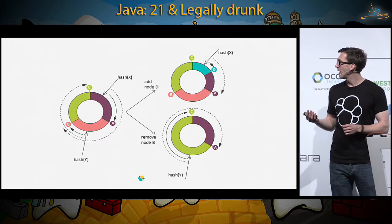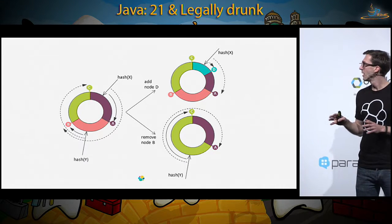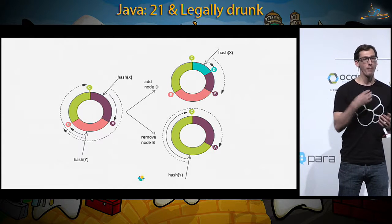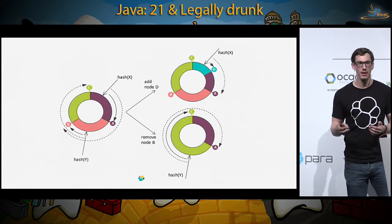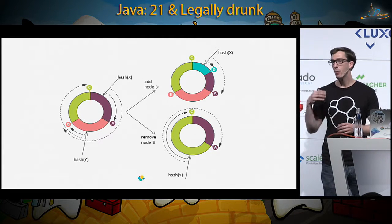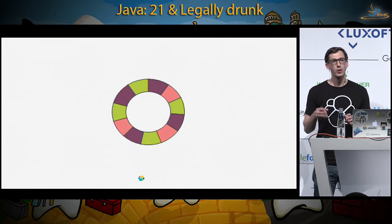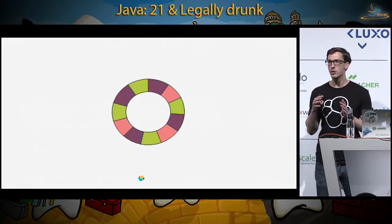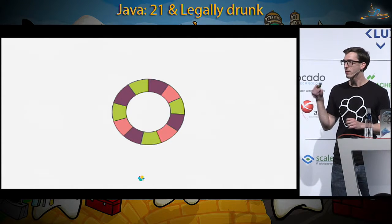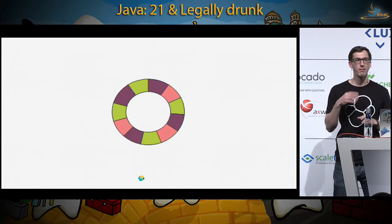If a node fails — say node B — node C, which already has B's replicated data, takes over serving that data primarily, and also replicates it to node A to maintain two copies. This is why your data is safe with Cassandra. To make scaling easier, you use virtual nodes (vnodes): instead of splitting the key space into a few large chunks, you use multiple smaller ones distributed evenly across servers. If one server fails, you don't have one huge chunk to migrate but multiple smaller ones already distributed, so less data needs moving.